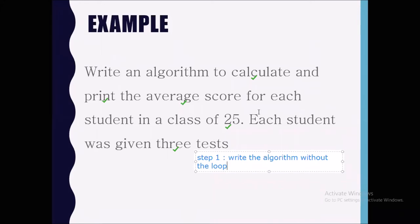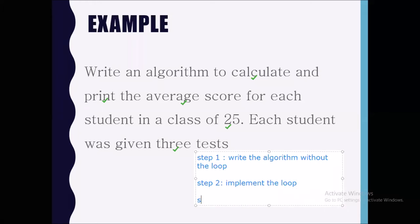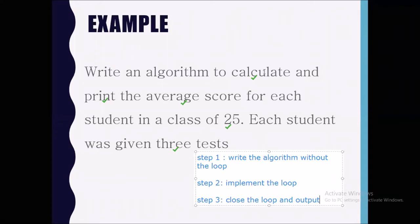So you would accept the three grades, calculate the average, and output the average. Then at step two, you implement the loop — you look at the algorithm and see which part is supposed to repeat, then put your FOR construct there. Step three is to close the loop and output data. You can output within the loop or outside of the loop depending on what the question asks. If it asks for the class average, you would output outside of the loop.